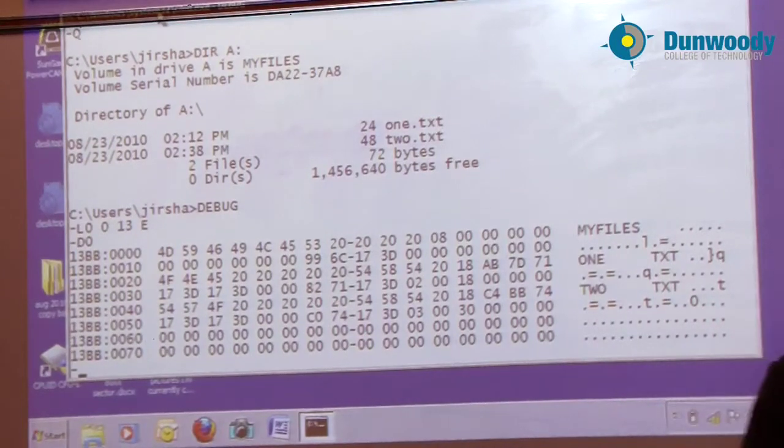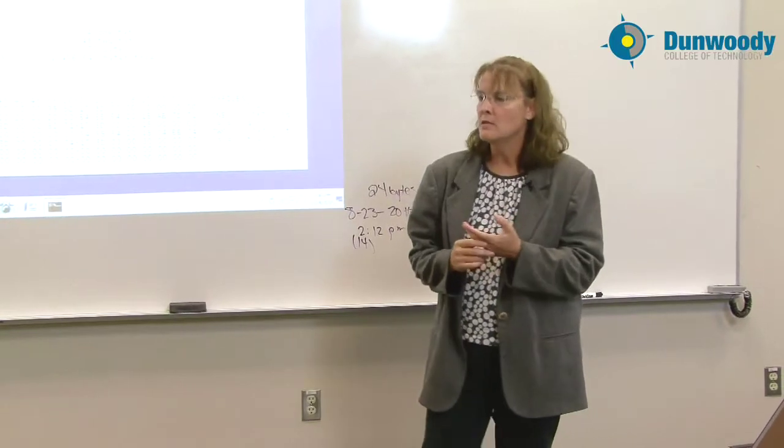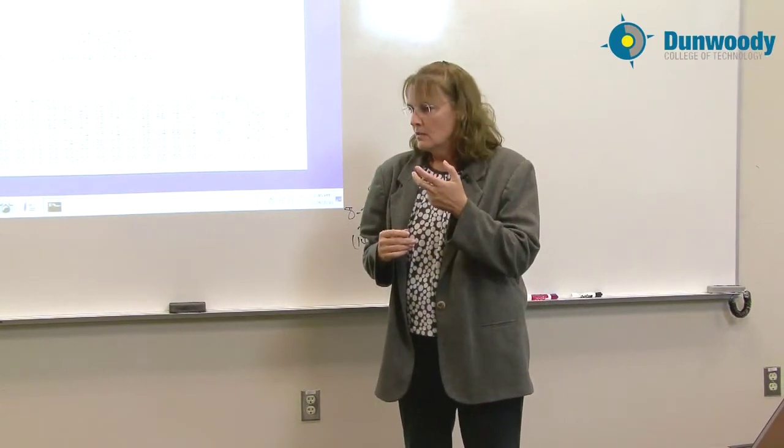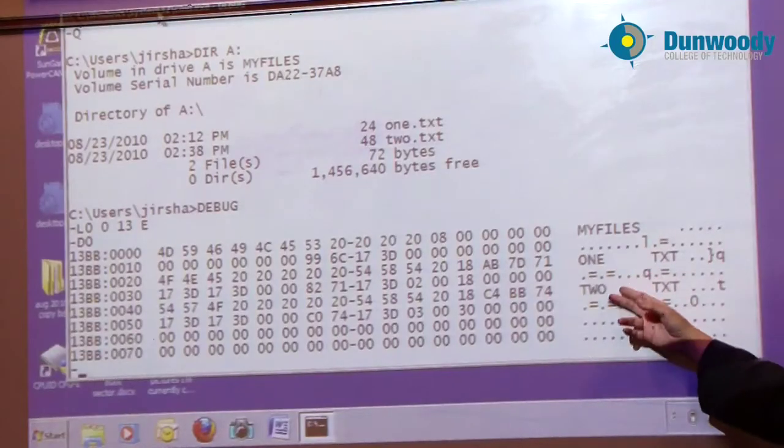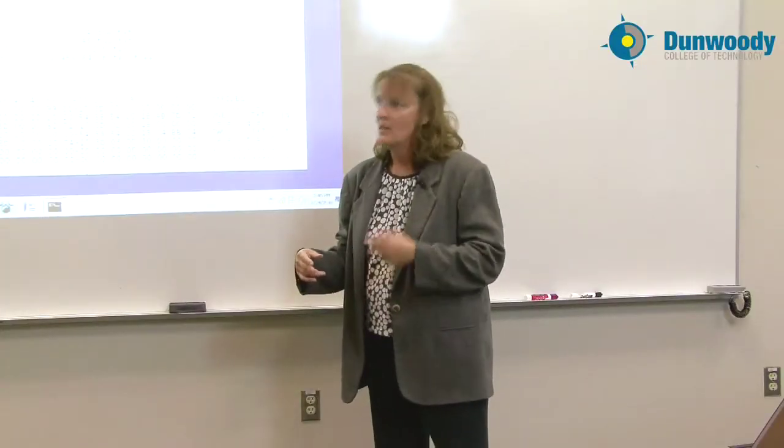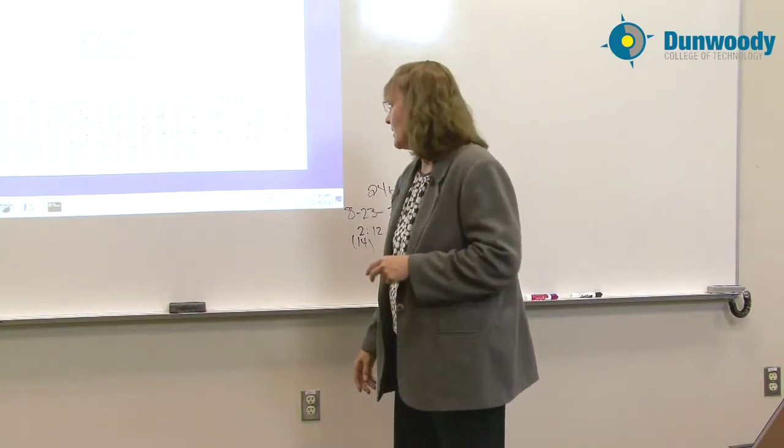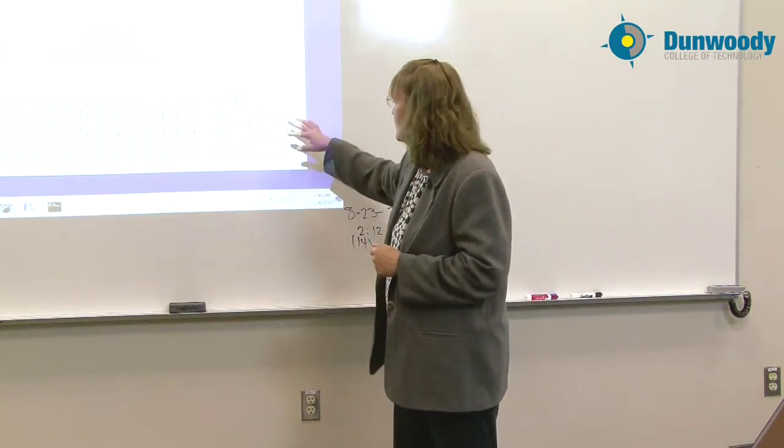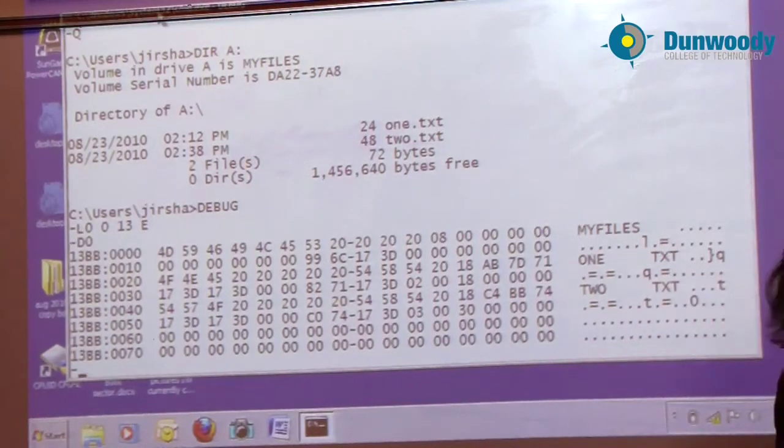Entries in a FAT directory table are 32 bytes per entry. In theory, then, we could say that each entry holds one file, as it does in this case. But if you use long file names, file names that are larger than 8 characters per name, each file then is going to take up more than one entry. But we won't look at that today. We'll just look at an individual entry for the file name 1.txt. Keeping in mind, again, that each entry is 32 bytes.